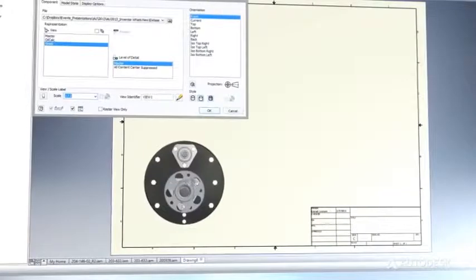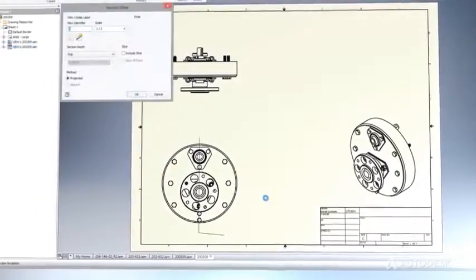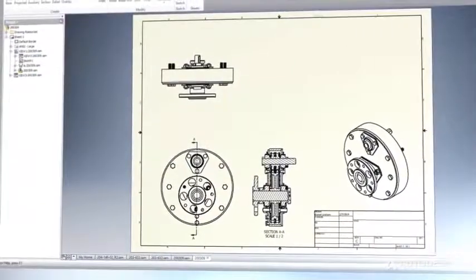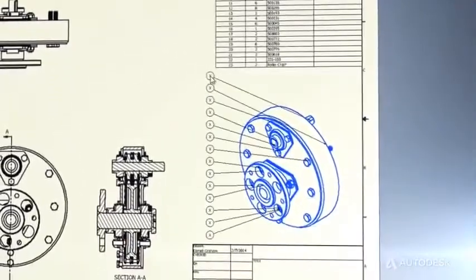Autodesk Inventor helps you to create accurate drawings dramatically faster than traditional 2D methods. Generate engineering and manufacturing documentation directly from the digital prototype helping you reduce errors and deliver designs in less time.